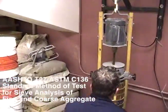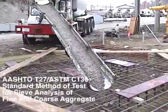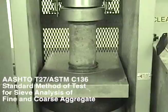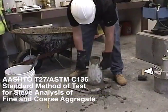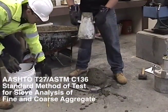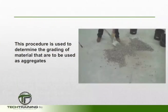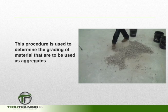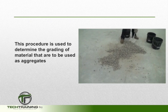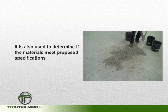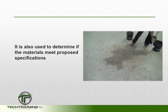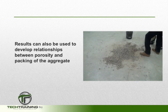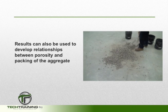The grading and maximum aggregate size of an aggregate in a concrete mixture can affect various properties, including strength and workability. This procedure is also used to determine the grading of materials that are to be used as aggregates, or to see if certain aggregates meet proposed specifications. Furthermore, it can be used to determine the relationship between porosity and packing.